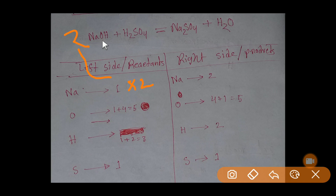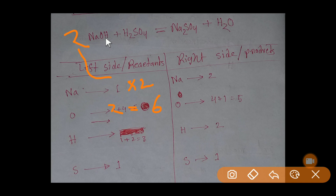After placing the coefficient two on NaOH, we get two plus four equals six oxygen on the left side, and two plus two equals four hydrogen on the left side. The number of sulfur remains unchanged.